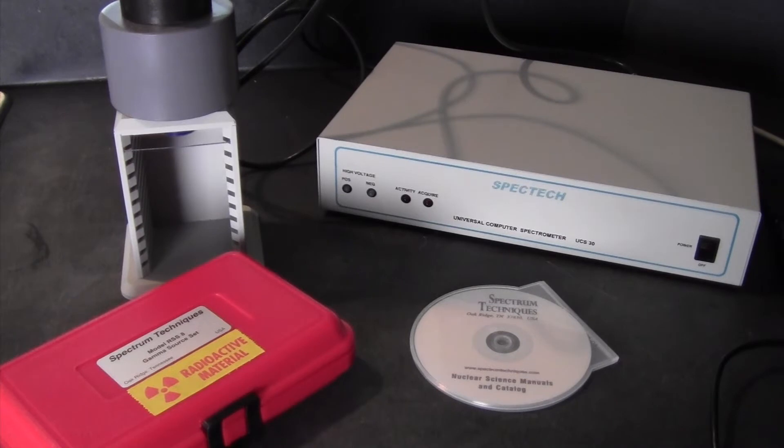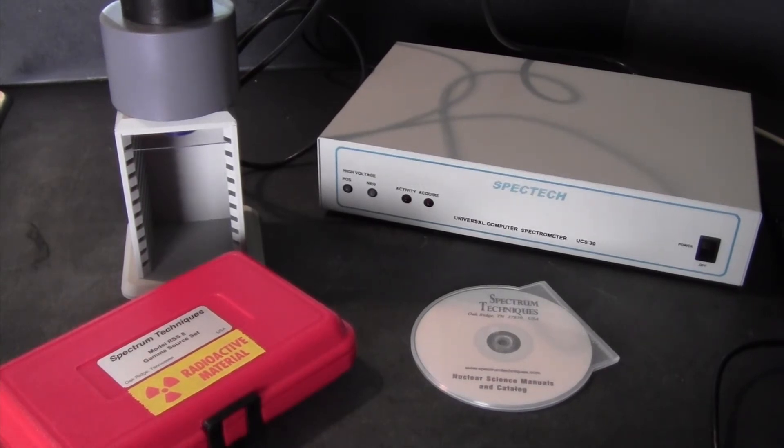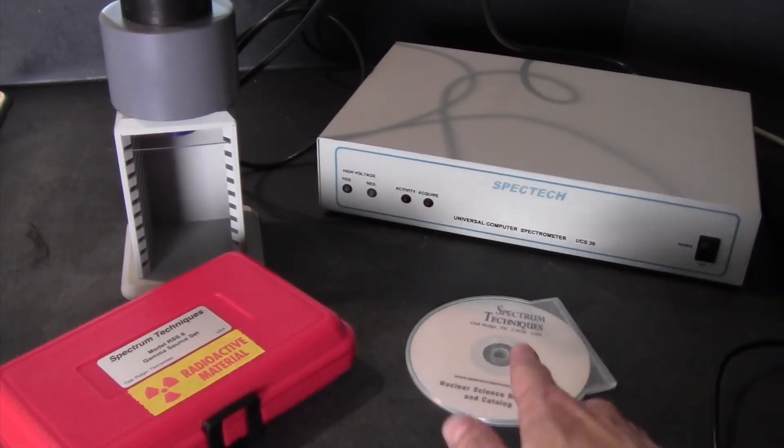This is the UCS30 Spectroscopy System Multi-Channel Analyzer. It includes the UCS30 Universal Computer Spectrometer with the software and manuals on this disk.